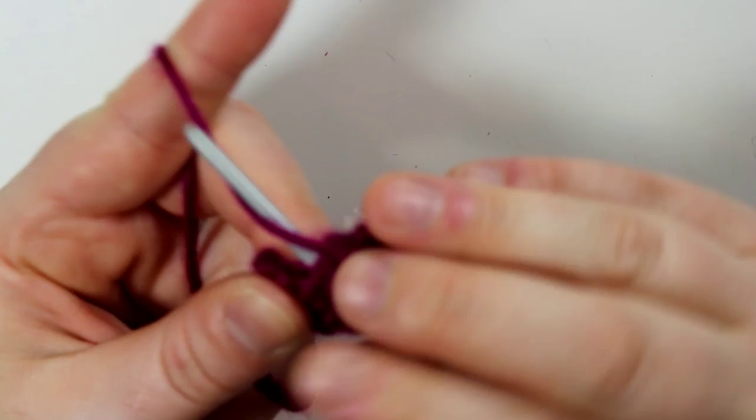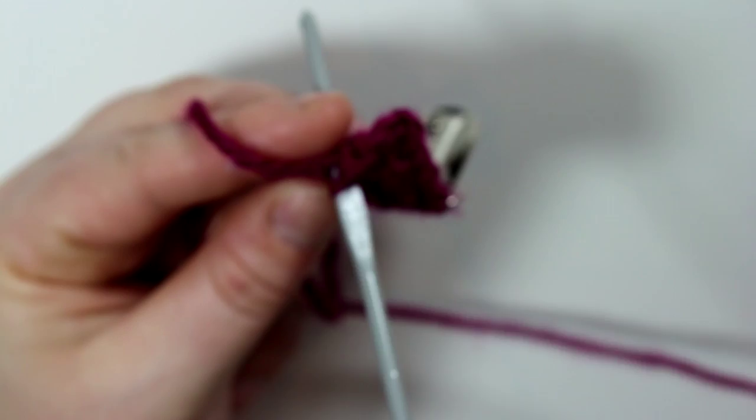Now we're going to start doing the little bumpies that you see. I think it's kind of like a puff stitch, I don't exactly know what it's called, but basically you do two single crochets and then you're going to do five single crochets into the next stitch.